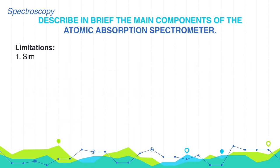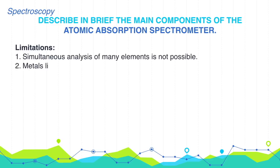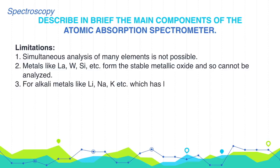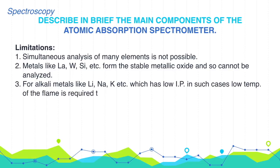Limitations. 1. Simultaneous analysis of many elements is not possible. 2. Metals like lanthanum, tungsten, silicon, etc. form stable metallic oxides and so cannot be analyzed. 3. For alkali metals like lithium, sodium, potassium, etc., which have low ionization potential, a low temperature flame is required to minimize ionization of the elements.